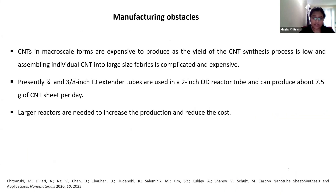There are several manufacturing obstacles in the synthesis process. Micro-scale CNTs are expensive to produce due to low process yield. Assembling individual CNTs into large-size fabric is complicated and expensive. Currently in our lab, we work with 1/4 and 3/8 inch inner diameter reactor tubes which produce 7.5 grams of CNT sheet per day. Larger reactors are needed to increase production and reduce cost. Optimum synthesis conditions are also needed — including synthesis temperature, carrier gas flow, flow composition, and glove box pressure — as all these parameters affect the sock condition and CNT sock properties.